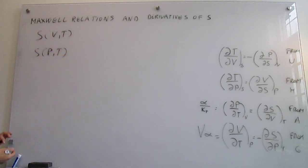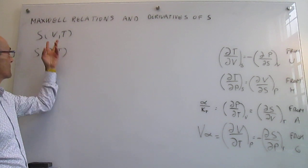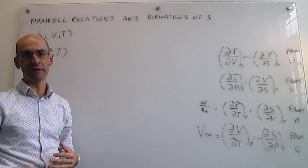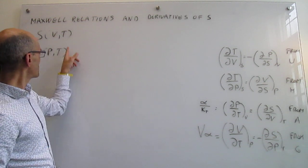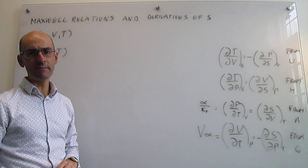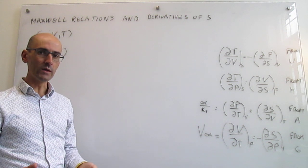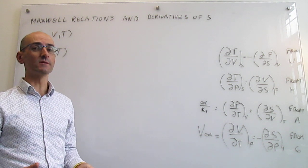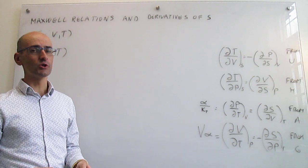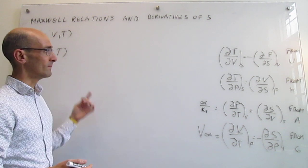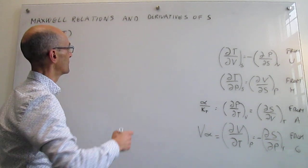The sensitivity of the function entropy with respect to these variables is going to be provided by the first derivatives. Notice that we have temperature in both of those functions, so let's first focus on the temperature dependence so that we can carry over and understand volume and pressure.